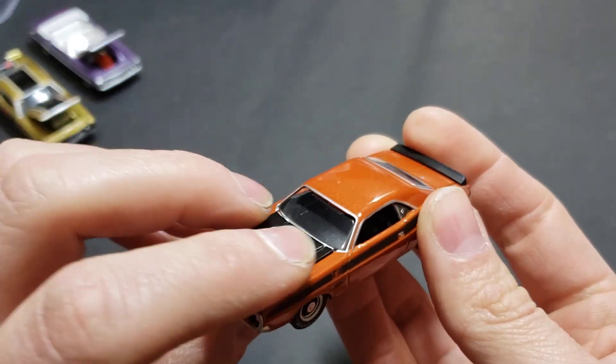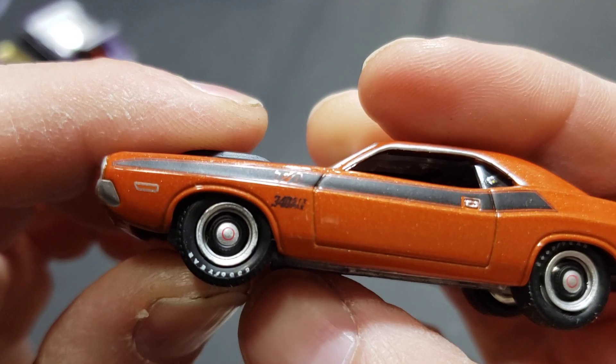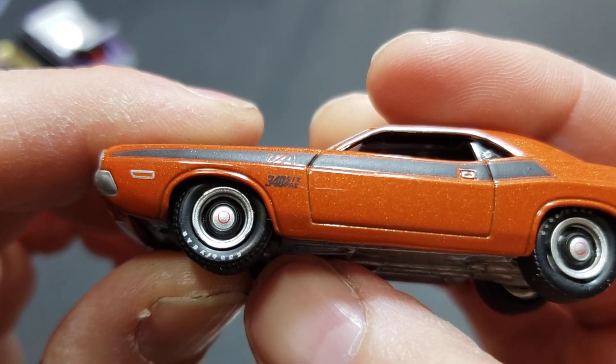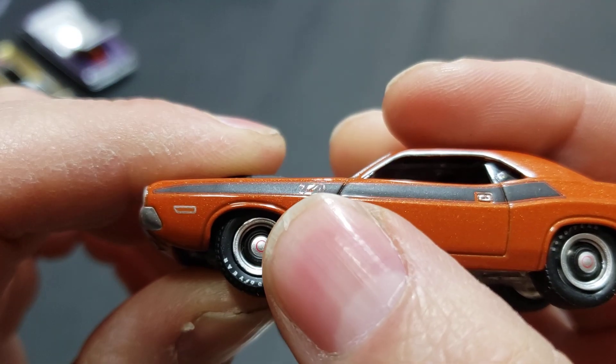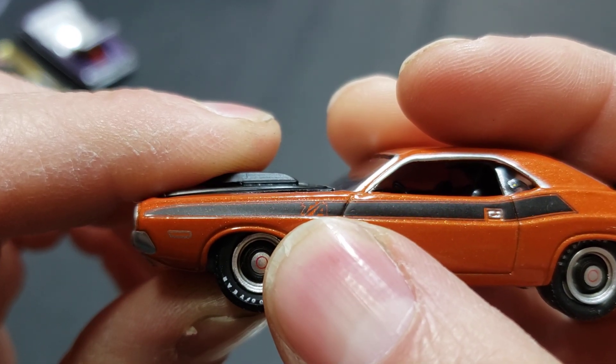I believe this is the fiberglass hood too, which makes it different than that one over there. Anyway, on the left side we do have the 340, you can clearly read it there, six pack, and TA right above it, kind of hard to make out, but if you angle it properly there you can see it.